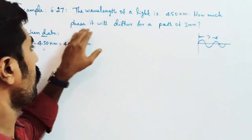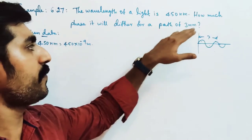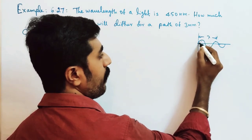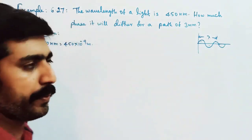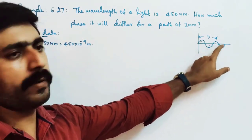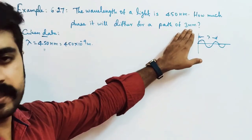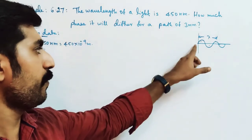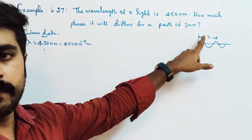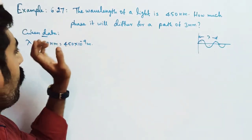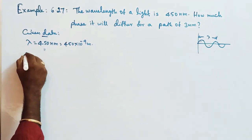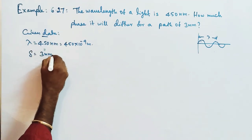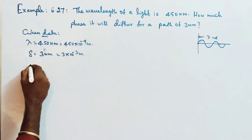The question asks: how much phase difference would occur for a path difference of 3 millimeter? The path difference value is 3 millimeter, which is equal to 3 into 10 power minus 3 meter.